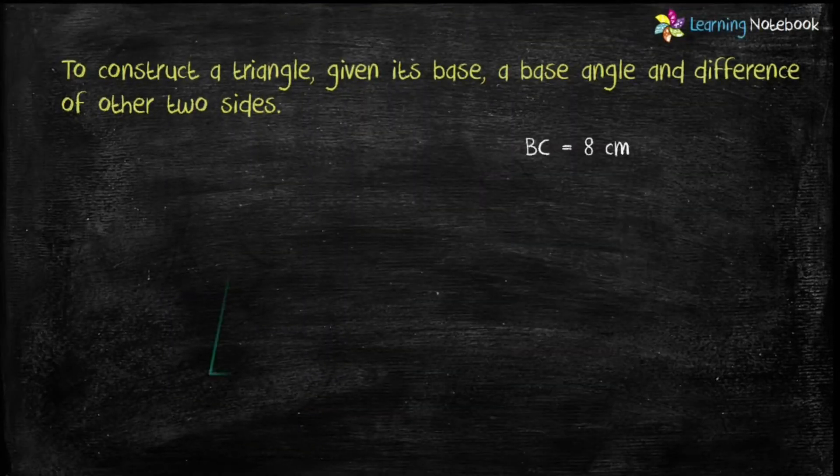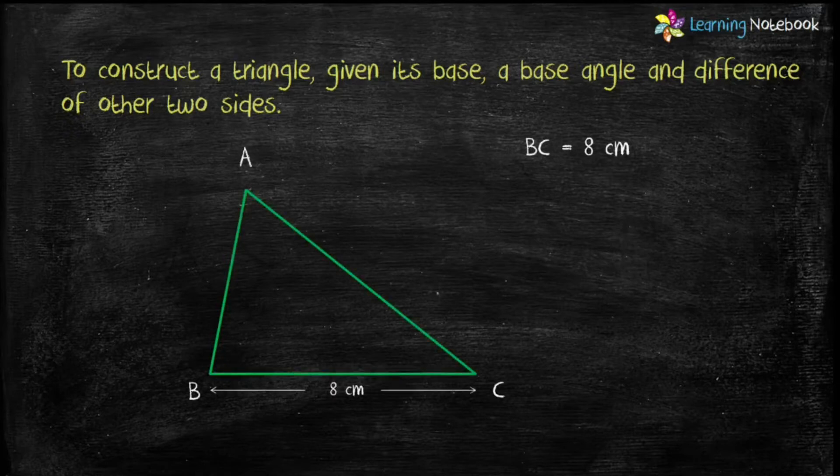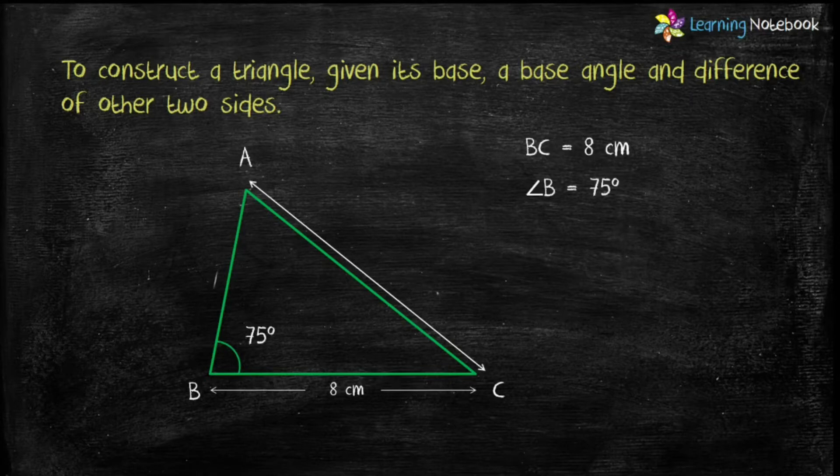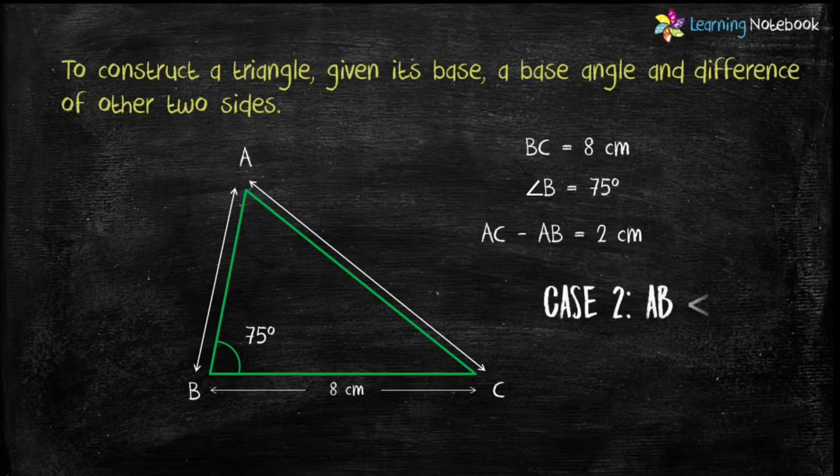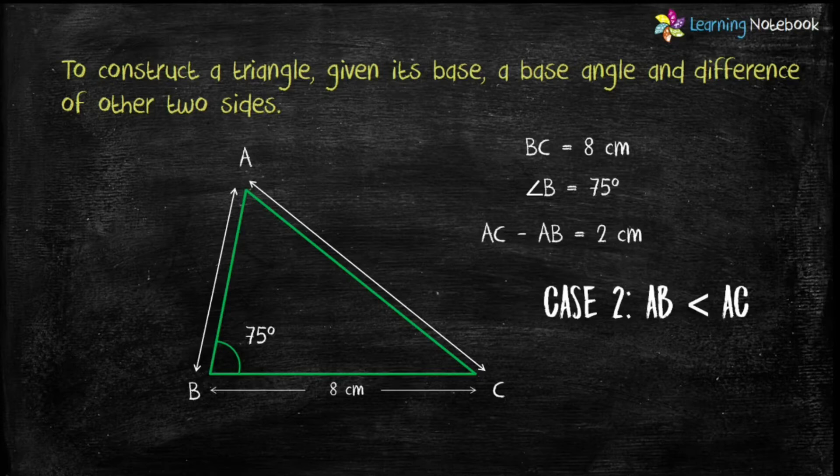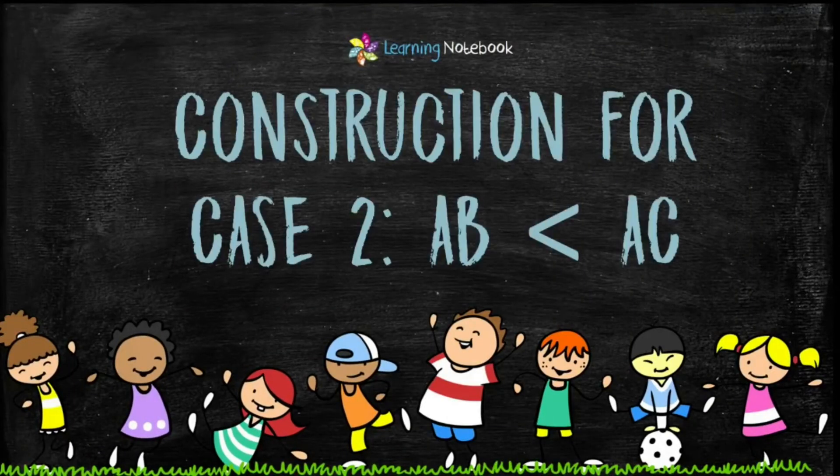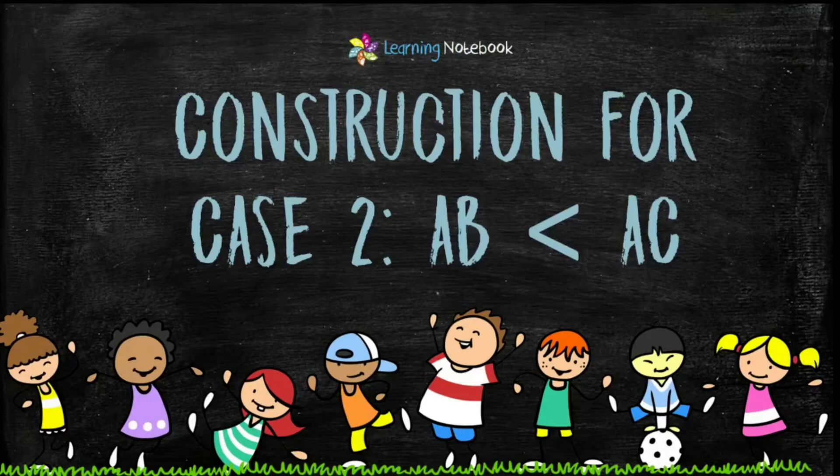Now let's see the second case. If in a construction question we are given base BC, angle B as base angle, and AC minus AB equals to let's say 2 cm, then it will be case number 2, which is construction of AB less than AC. In such questions the triangle will look like as shown here. So in this video we will do construction for case 2 when AB is less than AC.